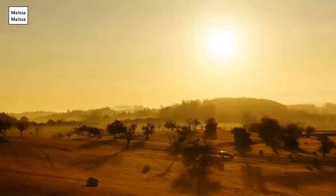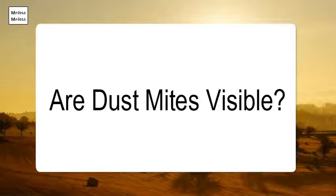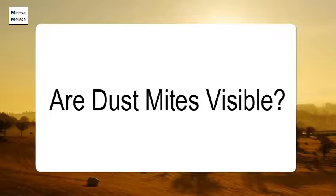Are dust mites visible? Dust mites are too small to be visible to the naked eye. They are only 250 to 300 microns in length and have translucent bodies. It takes at least a 10x magnification to be able to correctly identify them.